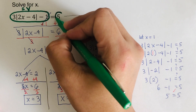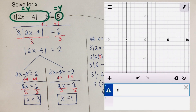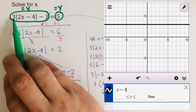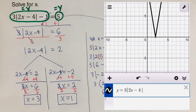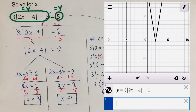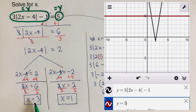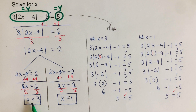And then we equal this 5 also to y. On the side, you will see the video on how to set this up on Desmos. So we have y equals 3 absolute value of 2x minus 4, minus 1. And the other equation would be y equals 5. As you can see, the solutions are x equals 3 and x equals 1. Both the graphical and algebraic methods give the same answer.